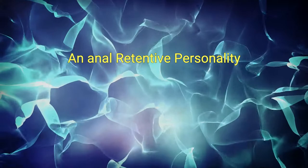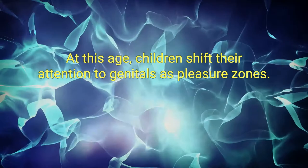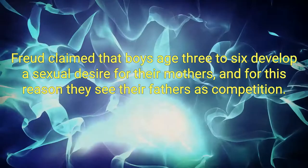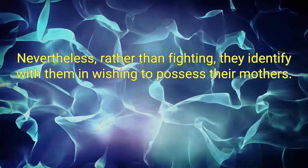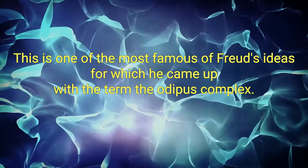3. Phallic Stage, 3 to 6 Years. At this age, children shift their attention to genitals as pleasure zones. Freud claimed that boys age 3 to 6 develop a sexual desire for their mothers, and for this reason they see their fathers as competition. Nevertheless, rather than fighting, they identify with them in wishing to possess their mothers. Those who do not overcome this phase tend to be confused or have a weak personality. This is one of the most famous of Freud's ideas, for which he came up with the term the Oedipus Complex.